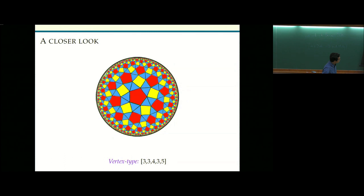For example, if you look at this vertex anticlockwise, you see a triangle, triangle, square, triangle, and pentagon. So counting the number of sides: 3, 3, 4, 3, 5. And that's true for every vertex in this picture. So this is called a uniform tiling with vertex type 3, 3, 4, 3, 5.